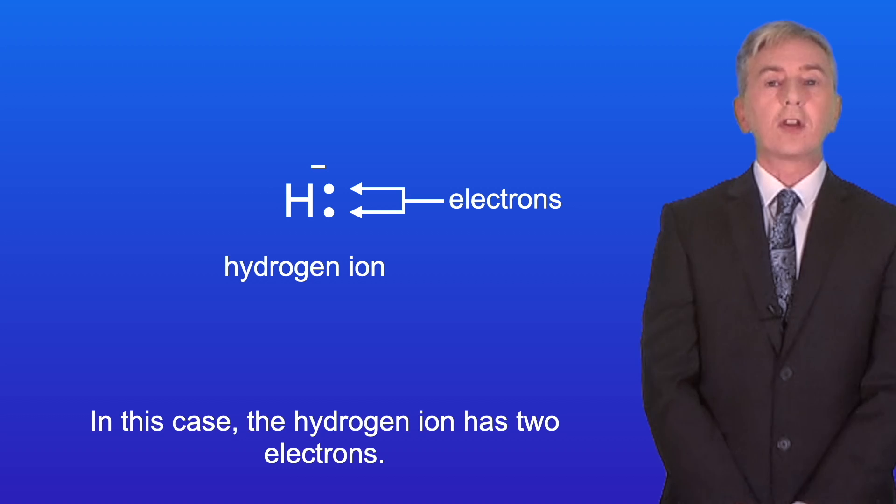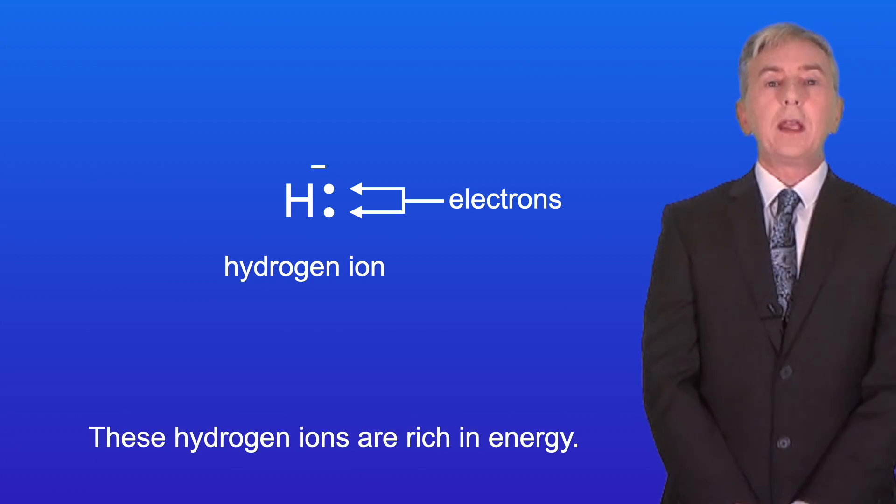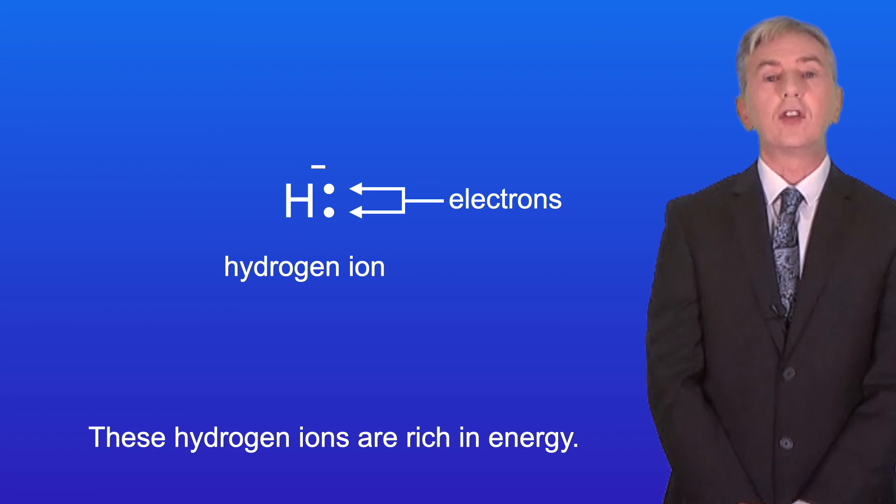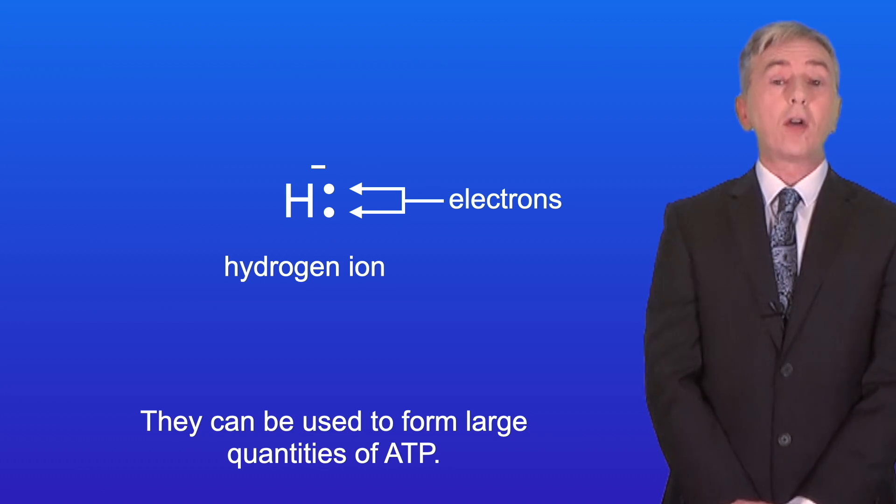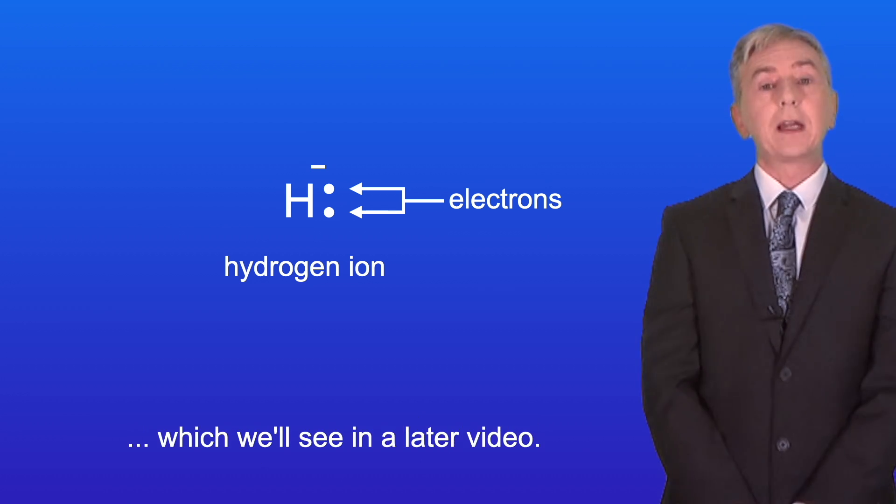In this case, the hydrogen ion has two electrons, and I'm showing that here. These hydrogen ions are rich in energy, and they can be used to form large quantities of ATP. This takes place during oxidative phosphorylation, which we'll see in a later video.